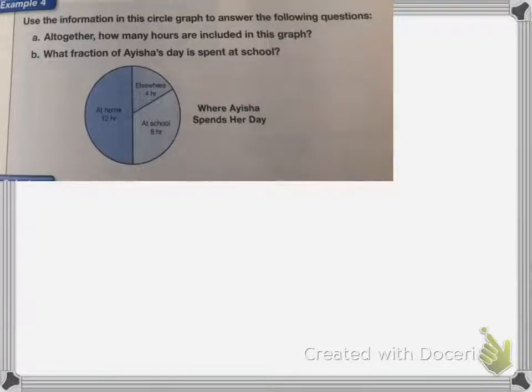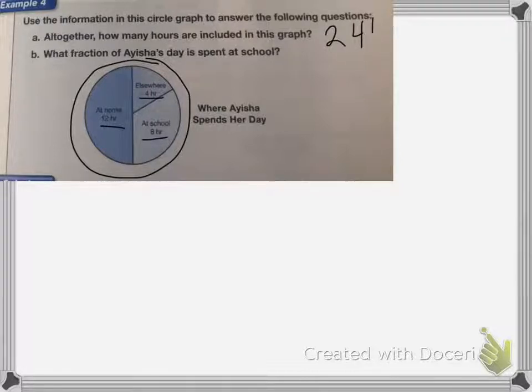This next graph is a circle graph, and it wants us to figure out all together how many hours are included in the graph. So the graph itself tells us how many hours we have. So we have 12 hours, 4 hours, and 8 hours. So there's a total of 24 hours represented on this graph.